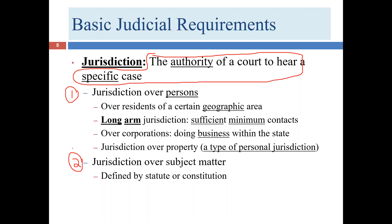Personal jurisdiction is the authority of a court to hear disputes involving a particular person living in a particular area. For example, if I want to sue Bob who lives in Minnesota and has no connections to Texas, a Texas court isn't going to have jurisdiction over Bob. What Bob will do is dispute that the Texas court has personal jurisdiction over him, and the court likely lacks this type of jurisdiction.